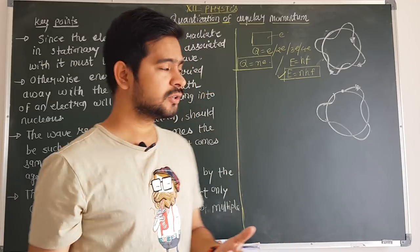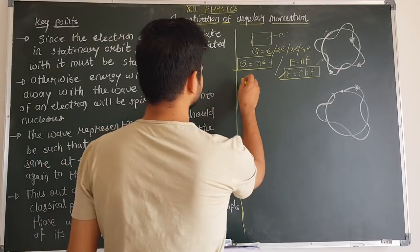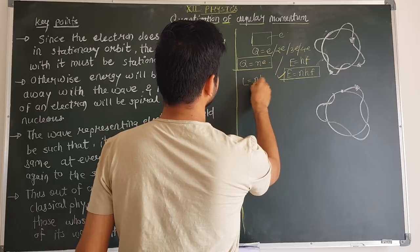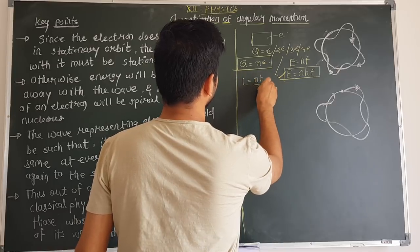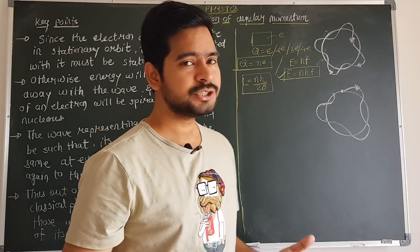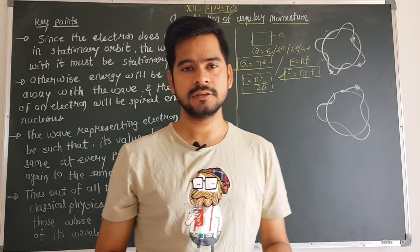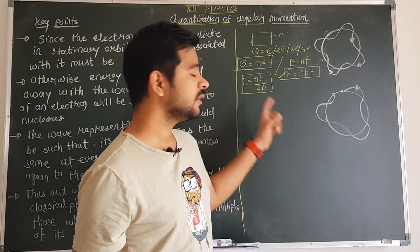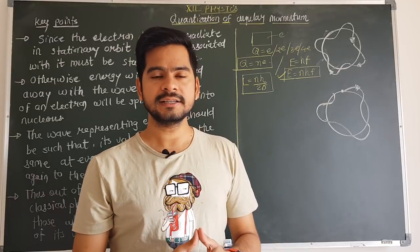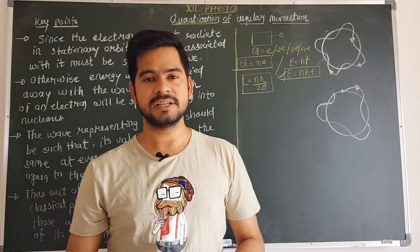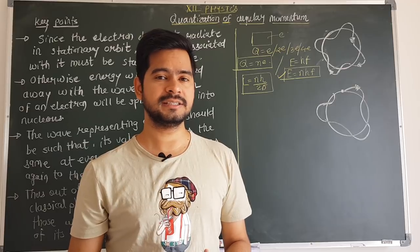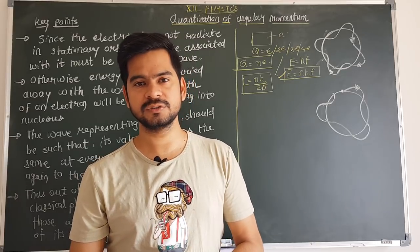In the second postulate, Bohr already gave the formula L = nh/2π. Now the question is: why should angular momentum have only those values that are integer multiples of h/2π?